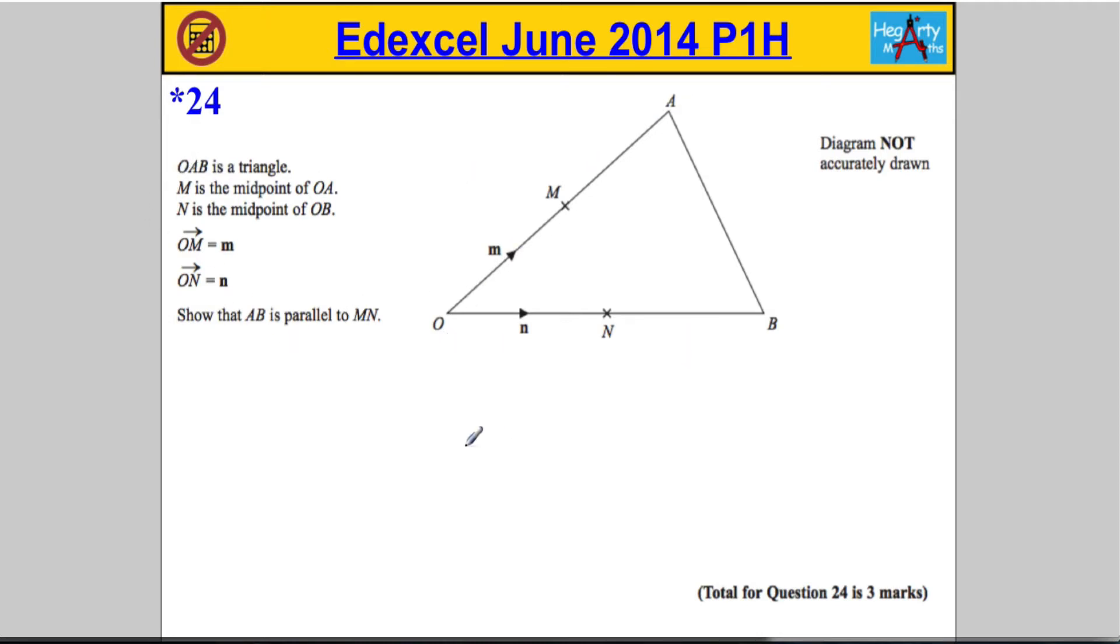We're given a triangle OAB. We're told that M is the midpoint of OA, N is the midpoint of OB, the vector OM is denoted by the letter m, and the vector from O to N is denoted by the letter little n. Show that AB is parallel to MN.